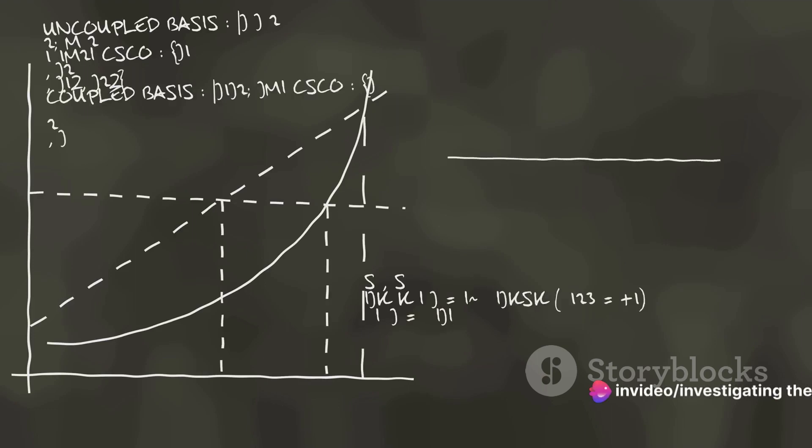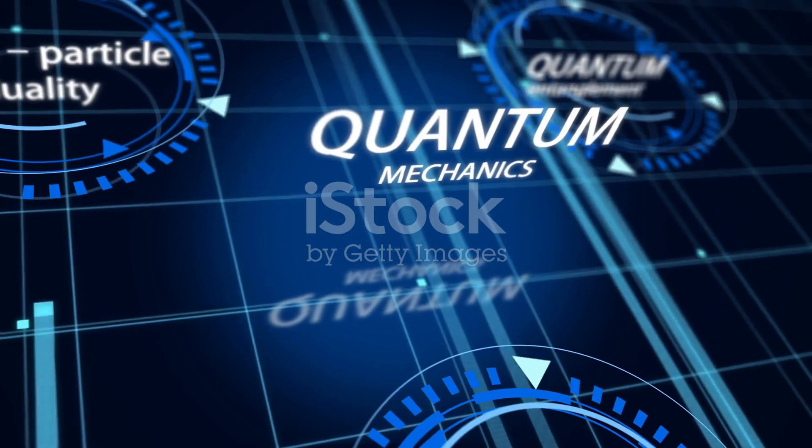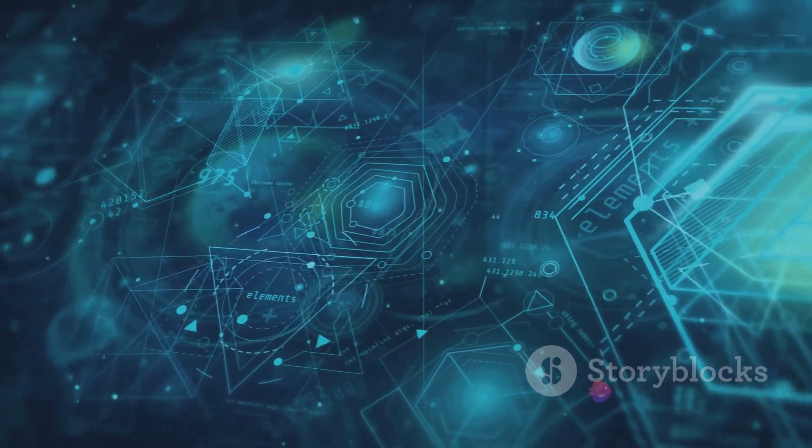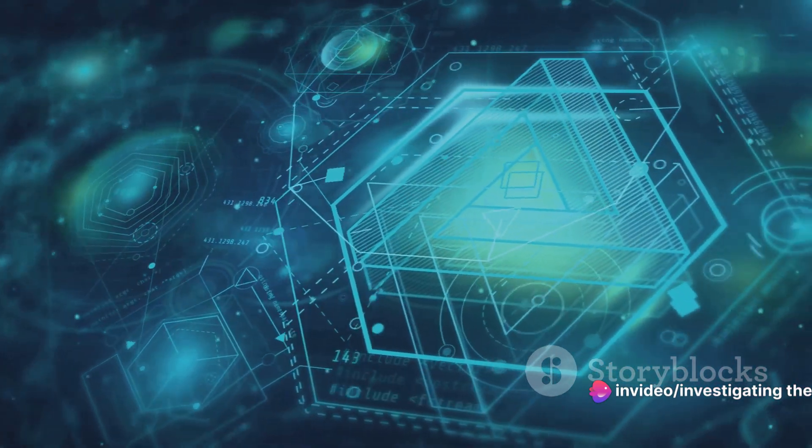They all interweave within the intricate tapestry of quantum mechanics, forming a complex web of equations that describe the weird and wonderful world of the quantum realm. Schrödinger's equation, Heisenberg's uncertainty principle, and the weird world of quantum equations.